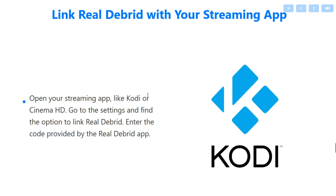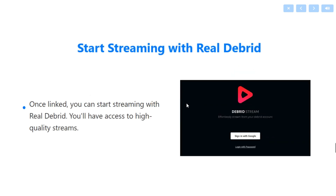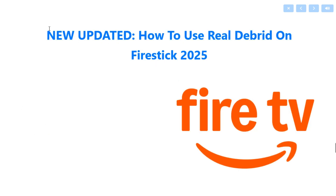Go to the settings in your streaming app and find the option to link Real Debrid. Enter the code provided by the Real Debrid app, and once it has been done you can start streaming with Real Debrid and will have access to high quality streams.